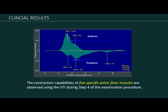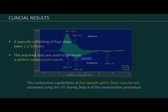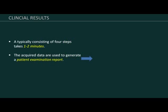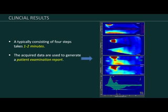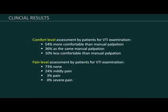The contraction capabilities of five specific pelvic floor muscles are observed using the VTI during step four of the examination procedure. A typical examination consisting of four steps takes one to two minutes and the acquired data is used to generate a patient examination report. Fifty-four percent of the patients classified the VTI comfort level as more comfortable than manual palpation. Thirty-six percent reported it as the same. Seventy-three percent of the patients classified the VTI pain as none. Twenty-four percent as mildly painful, and three percent as painful.